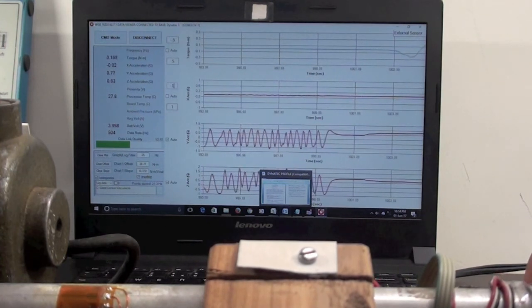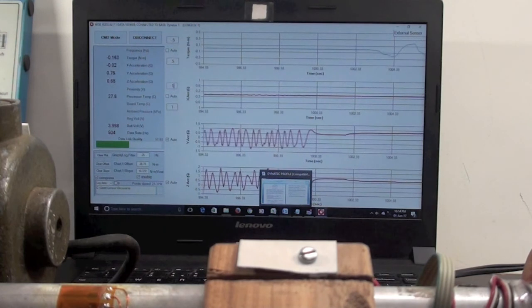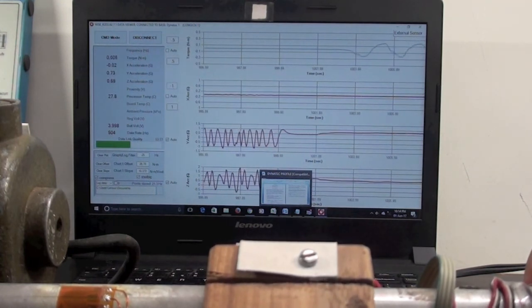When the bar is twisted by hand, the first plot in blue responds to show the torque values.